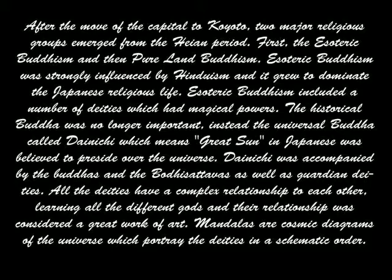After the move of the capital to Kyoto, two major religious groups emerged from the Heian period: esoteric Buddhism and pure land Buddhism. Esoteric Buddhism was strongly influenced by Hinduism and grew to dominate Japanese religious life. It included a number of deities with magical powers. The historical Buddha was no longer important; instead the universal Buddha called Dainichi, meaning Great Sun in Japanese, was believed to preside over the universe. Dainichi was accompanied by Buddhas, Bodhisattvas, and guardian deities. All the deities have a complex relationship to each other, and learning their relationships was considered a great work of art.